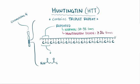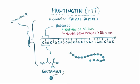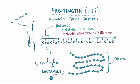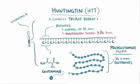CAG codes for the amino acid glutamine, so people with Huntington disease will have 36 or more glutamines in a row in the Huntington protein. So in addition to being a triplet repeat disorder, HD is, more specifically, a polyglutamine disease.